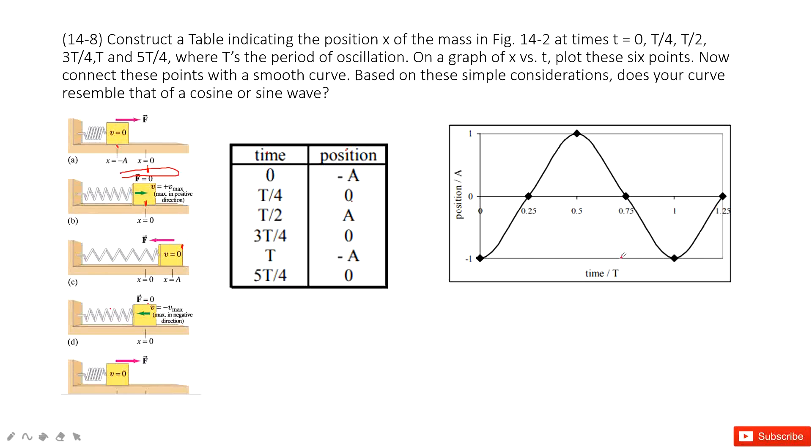Horizontally we use time over T as a unit. So this is a quarter of T, half of T, three-quarters of T, and T. Vertically is the position over A. So this is A, this is negative A, this is 0.